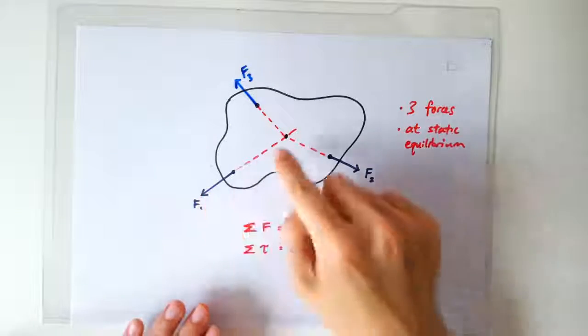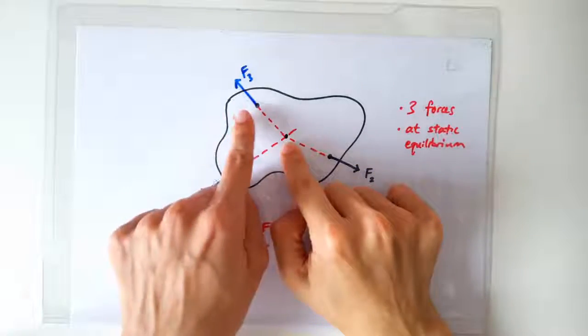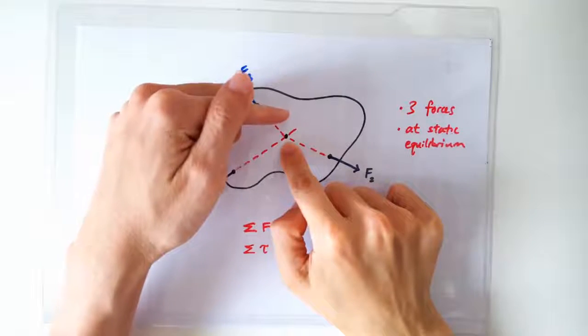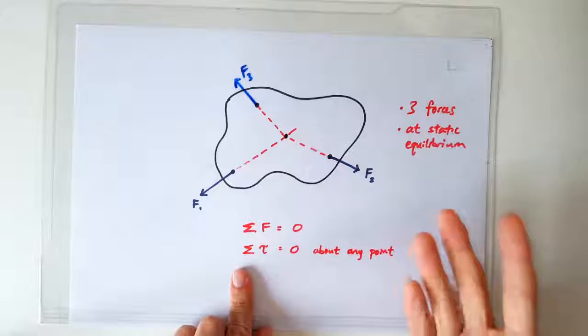Because if two of them intersect at one point, and the last one doesn't, then the net moment cannot be zero.